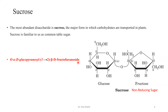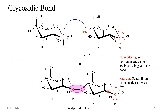We write 'beta-D-fructofuranoside' — using '-side' rather than '-furanose' — to indicate this is linked through its anomeric carbon. In sucrose, both anomeric carbons are involved in the glycosidic bond, so they are not freely available for reducing other species. Therefore sucrose gives no positive reaction specific for reducing sugars — it is a non-reducing sugar.